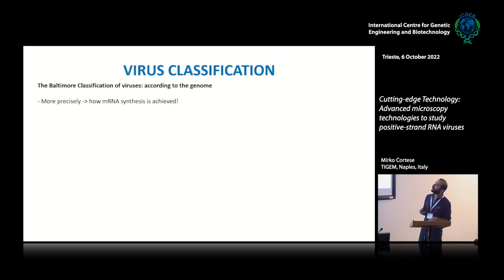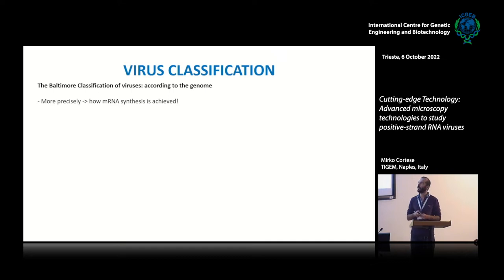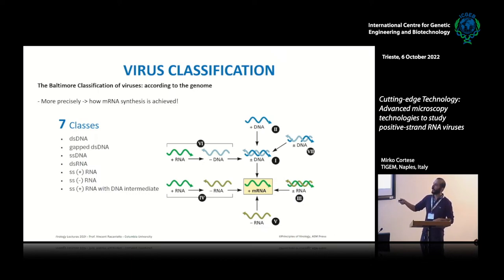Viruses have evolved to hide their genetic material inside the cells so the cell cannot detect what's happening until it's too late. They modify the cells and create a novel environment that supports viral replication. I won't go through viral classification — I just want to show that you can have viruses with several kinds of genomes, but for our purpose today we only discuss positive-stranded RNA viruses.